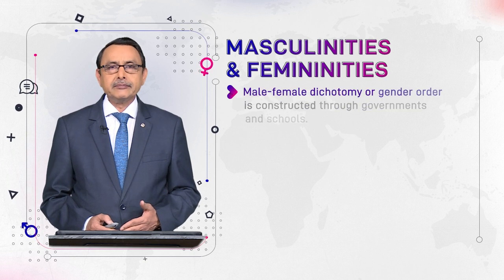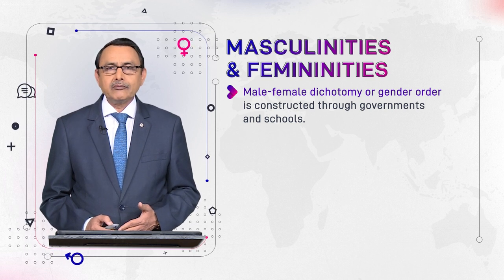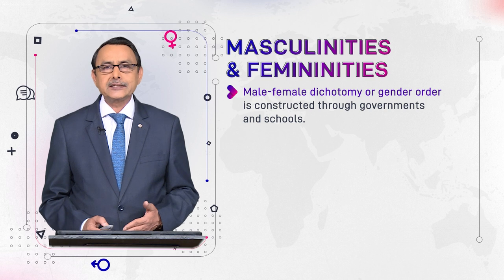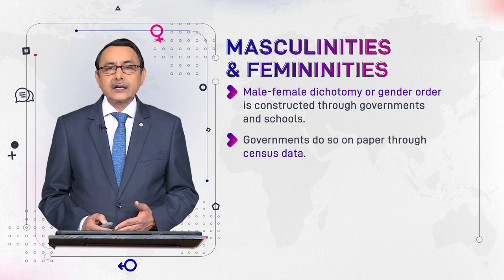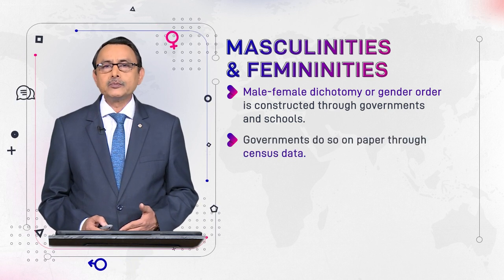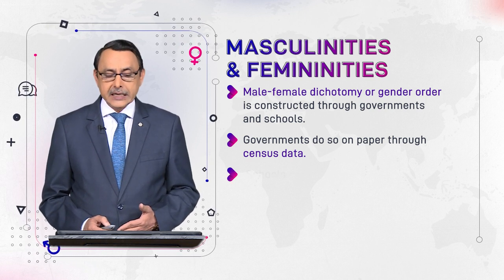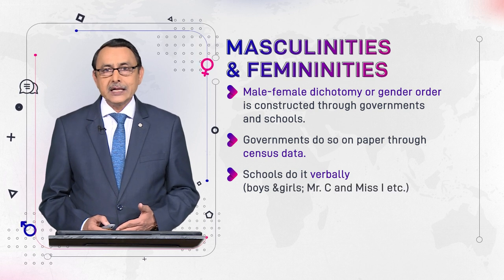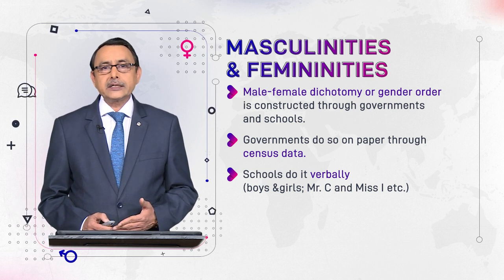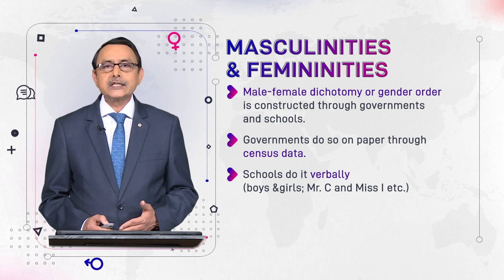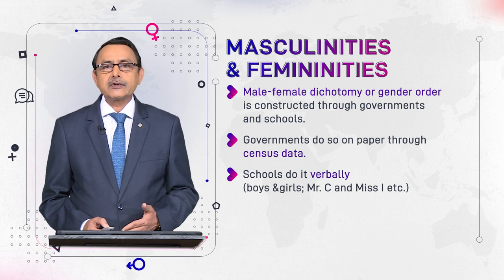we are talking about the male-female dichotomy, or what we call gender order. This is established by social institutions like governments and schools. Governments do this when they ask people to provide information through a census, for example. Schools do it verbally — teachers often say 'boys and girls,' or even when teaching consonant and vowel sounds, a teacher may use 'Mr.' for consonants and 'Mrs.' for vowels.